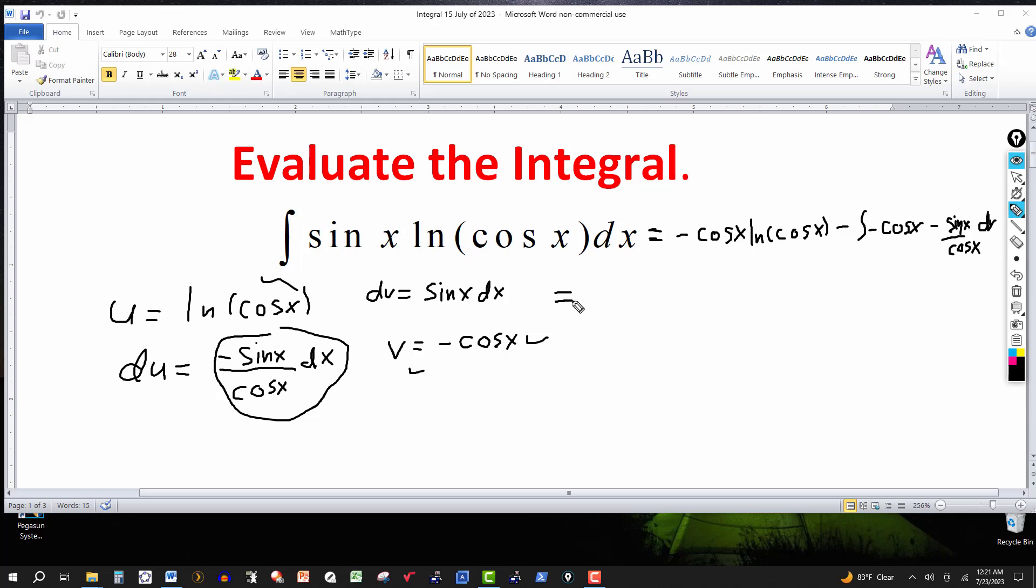Minus cosine of x ln of cosine of x—just rewriting the first part. So I've got a negative here and a negative here that are going to cancel, so this becomes positive. And then this cosine and this cosine will cancel. So all I've got here is the integral of minus sine of x dx.